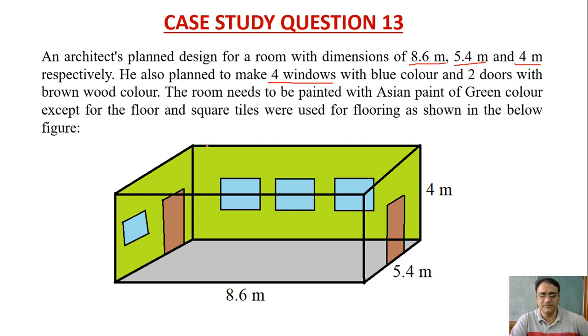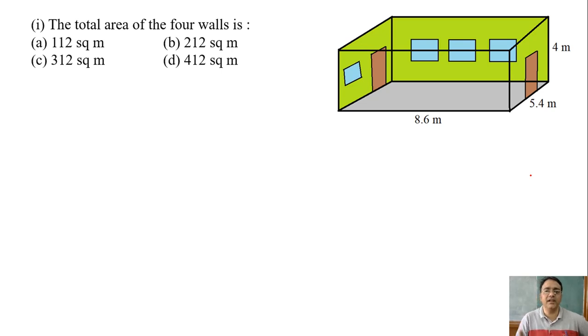The room needs to be painted with Asian paint of green color except for the floor, and square tiles were used for flooring as shown below. This is the structure and based on this some questions are there. So the first question: the total area of the four walls including all windows and doors.